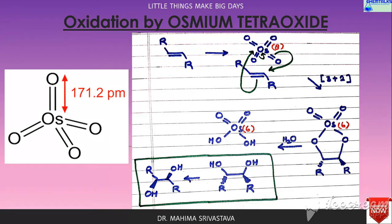In this diagram, you can see that osmium keeps shuttling between oxidation states 8 and 6. As shown in the figure, first the ester is formed, and then in the presence of water, the required hydroxyl groups are attached to the alkene and a saturated compound is obtained. These two compounds have different stereochemistry.